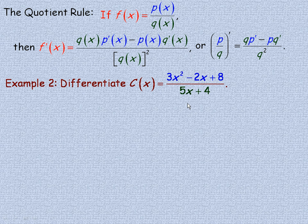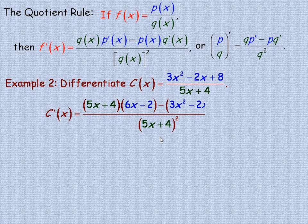We'll differentiate the same function using the quotient rule to show it works more cleanly than the product rule. Starting with q of x times p prime of x: that's the denominator 5x plus 4 times the derivative of the numerator, which is 6x minus 2. Then we subtract p of x times q prime of x: the original numerator 3x squared minus 2x plus 8 times the derivative of 5x plus 4, which is just 5. All over the denominator squared: 5x plus 4 squared.